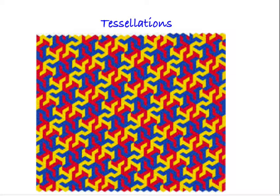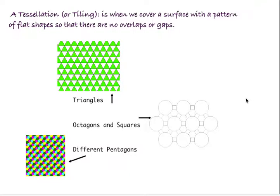But let's look at the definition of tessellations. A tessellation or tiling is when we cover a surface with a pattern of flat shapes so that there are no overlaps or gaps.